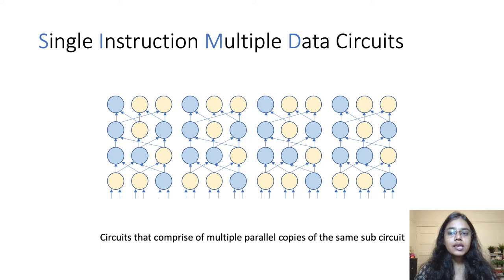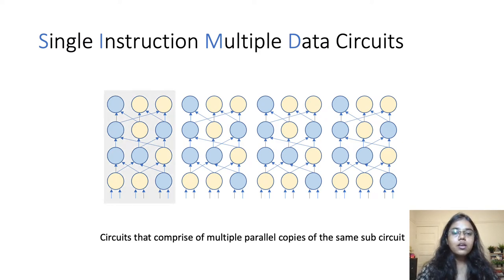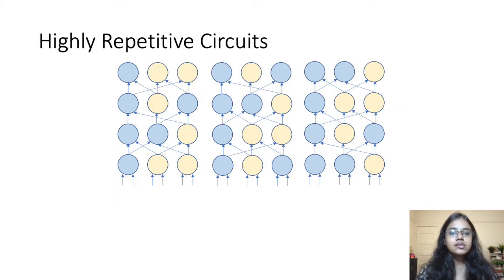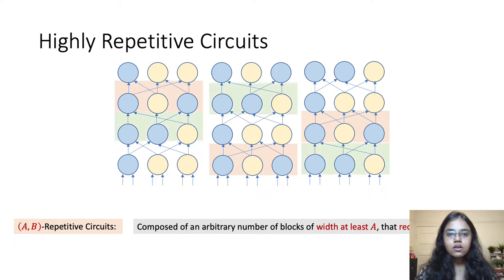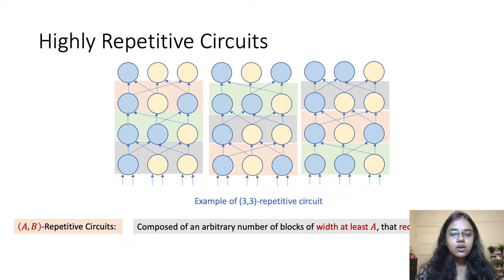Let me explain what SIMD and highly repetitive circuits are and what's the difference between the two. SIMD stands for Single Instruction Multiple Data. These circuits comprise multiple copies of the same sub-circuit. For instance, in this example, this circuit contains four copies of the same sub-circuit. Highly repetitive circuits are a superclass of SIMD circuits. Before I talk about highly repetitive circuits, let me define a class of circuits that we refer to as AB-repetitive. We say that a circuit is AB-repetitive if it has an arbitrary number of blocks of width at least A that repeat at least B times. Here, we refer to blocks as a group of gates that are on the same multiplicative depth in the circuit. For example, in this figure, the orange block repeats multiple times, and so does the green one and the grey one. This is an example of a 3,3-repetitive circuit.